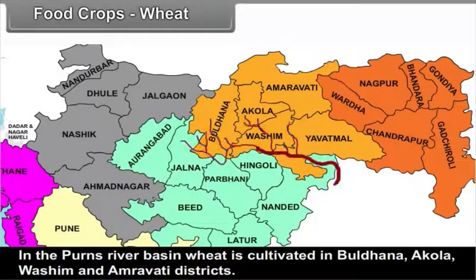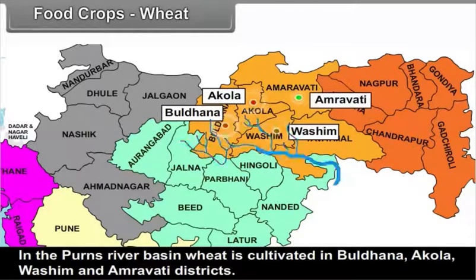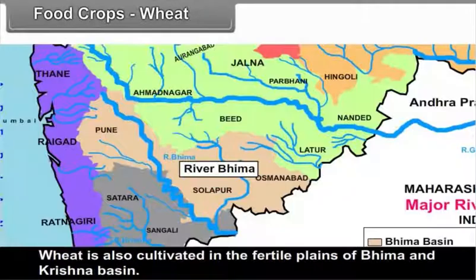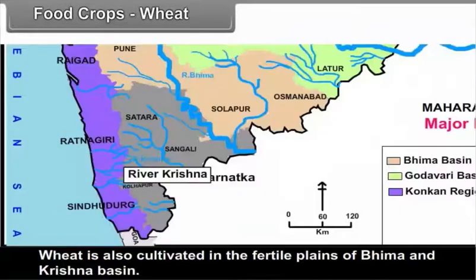In the Purna river basin, wheat is cultivated in Buldhana, Akola, Vashim, and Amravati districts. Wheat is also cultivated in the fertile plains of the Bhima and Krishna basin.